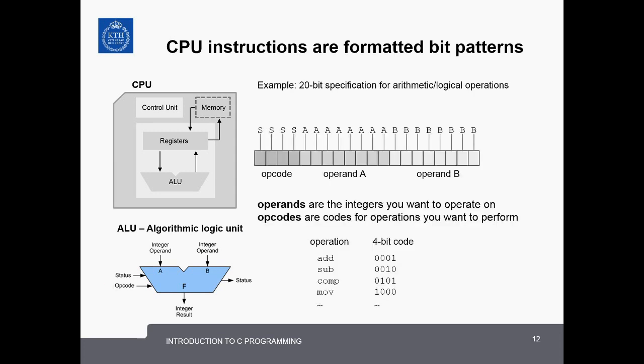Now let's look at an example of how formatted bit patterns can be used to make machine instructions that can be executed on a real CPU. Here we have a hypothetical example of a machine language specification for an algorithmic logic unit. It's a 20-bit format that is formatted first with an opcode which we call S of 4 bits and then operand A which is 8 bits and then operand B which is 8 bits as well.